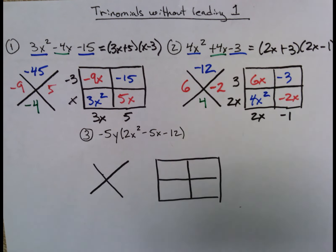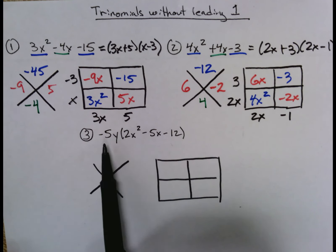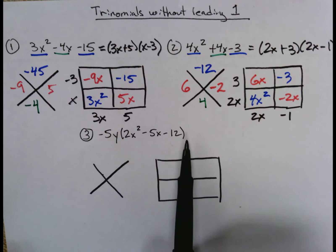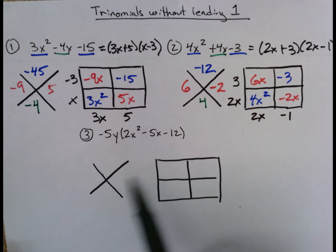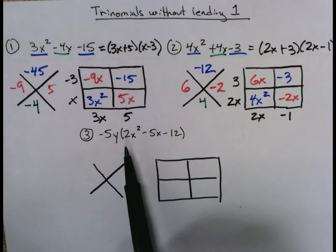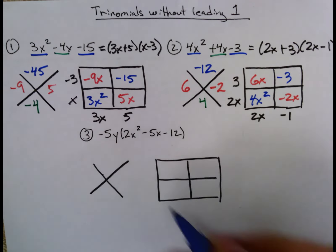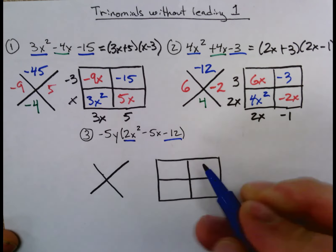Our final example, we have a little bit different. We have a greatest common factor already factored out. That -5y doesn't do anything with this stuff. We just still have to factor out your 2x² - 5x - 12. So as I look at those terms, 2x² and -12 go in the top.